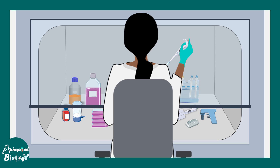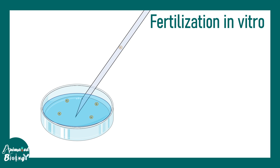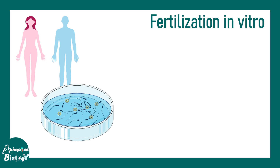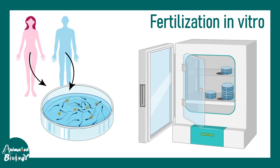After that, in sterile culture settings these oocytes are cultured — they are placed in a petri dish in a sterile condition. Sperm from the male donor is then added to this same container. Overall, the gametes of male and female are transferred into a petri dish and they are left there for fertilization.